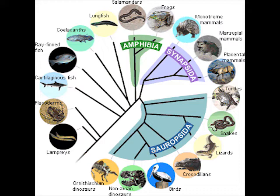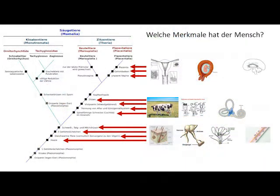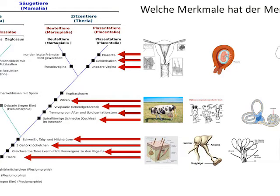Verzweigungen, die von einem gemeinsamen Verzweigungspunkt entstehen, bezeichnet man auch als monophyletisch. Wenn wir uns das Kladogramm der Säugetiere nochmals vergegenwärtigen, bleibt vielleicht die Frage offen: Wo würden wir als Menschen eingeordnet werden? Wenn wir die Merkmale ansehen: Wir haben Haare, sind gleichwarm, haben Schweiß- und Milchdrüsen sowie mit Hammer, Amboss und Steigbügel drei Gehörknöchelchen. Wir sind also Säugetiere.